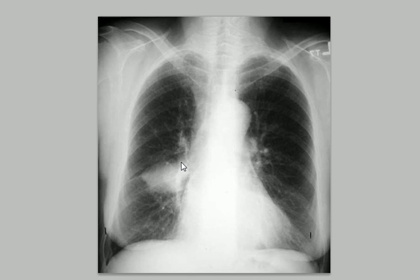Number two is lucency, also known as radiolucency, and you need to understand what radiolucent or radiolucency means. The third clue of an abnormality on an x-ray is either displacement or distortion of a normal structure, with or without any features of abnormal opacity or abnormal lucency.